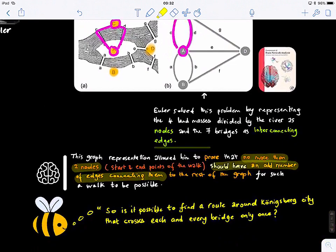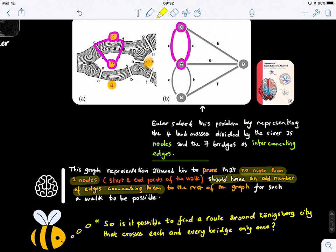Let me ask you, we have our smart inquisitive bee. I would like you to think about it. Is it possible to find a route around Königsberg city that crosses each and every bridge only once, according to this property, that proposition that he derived?